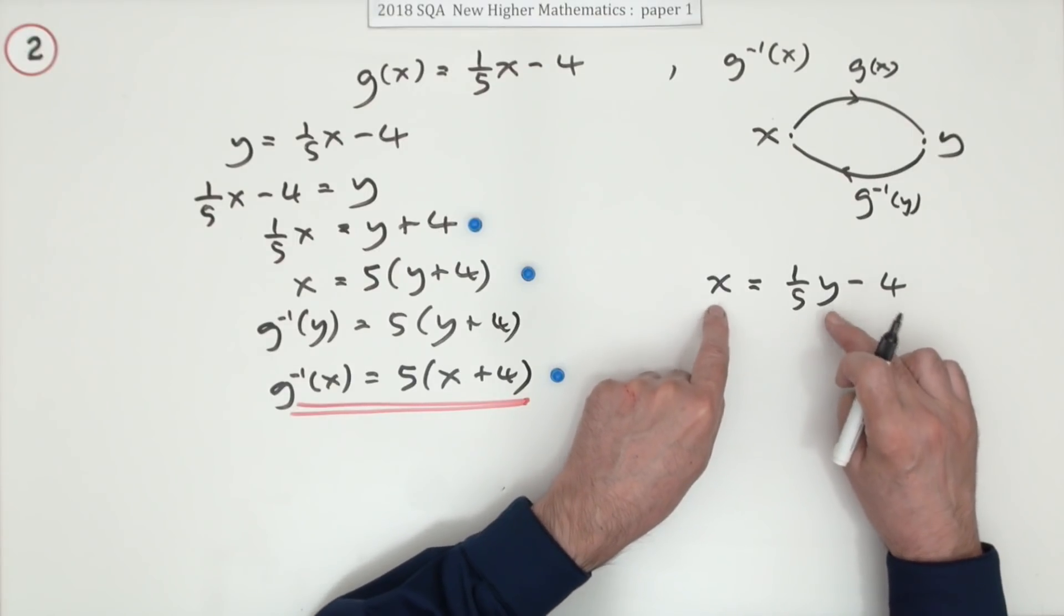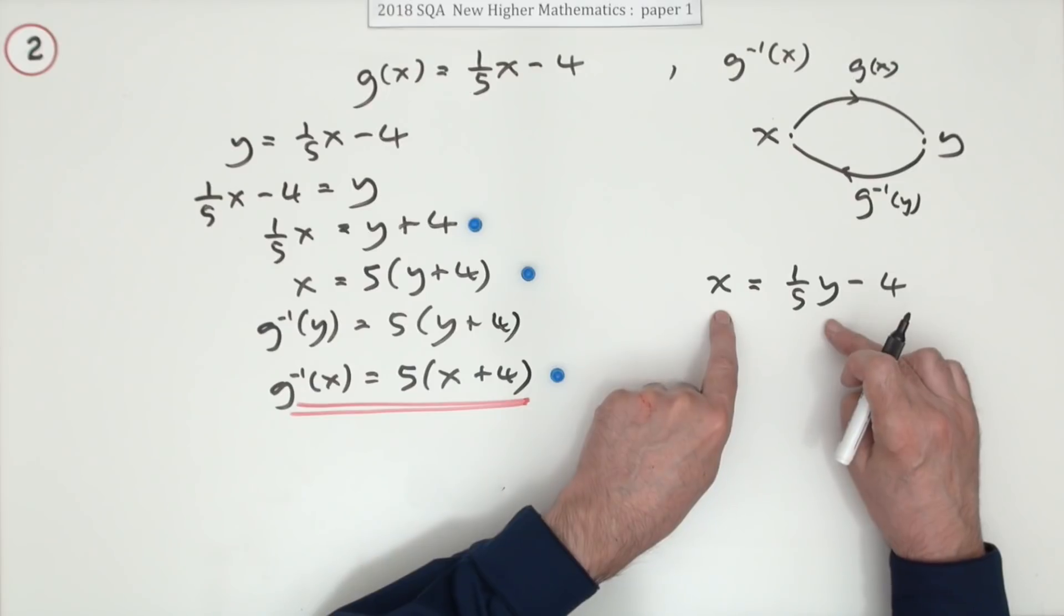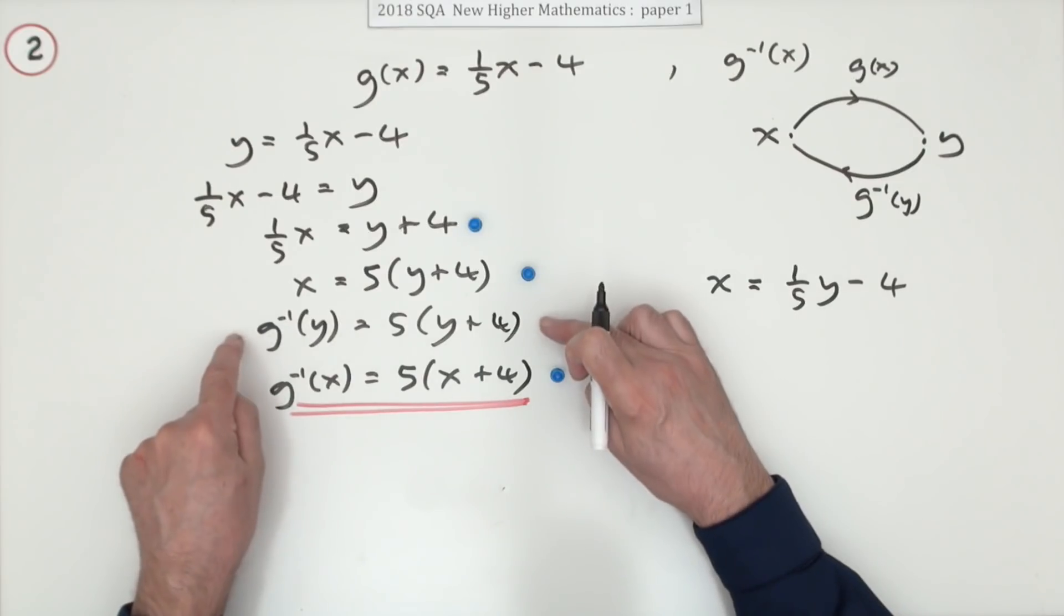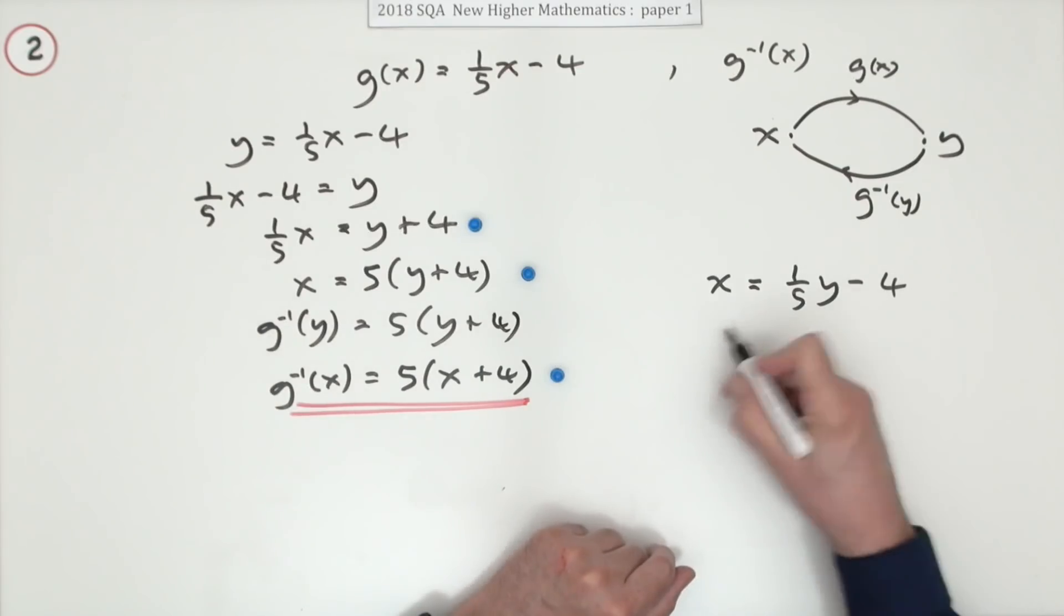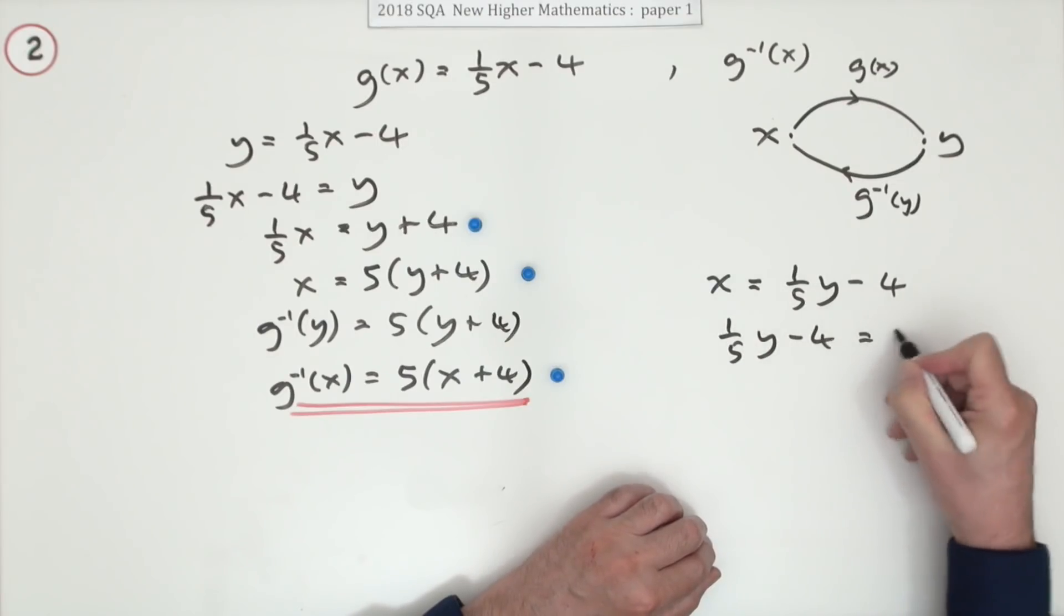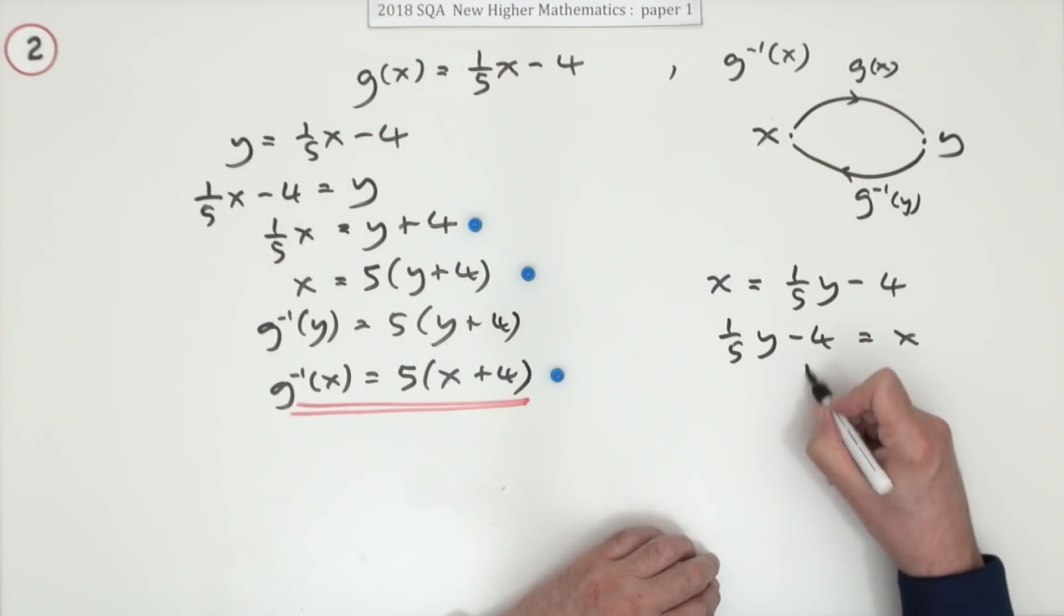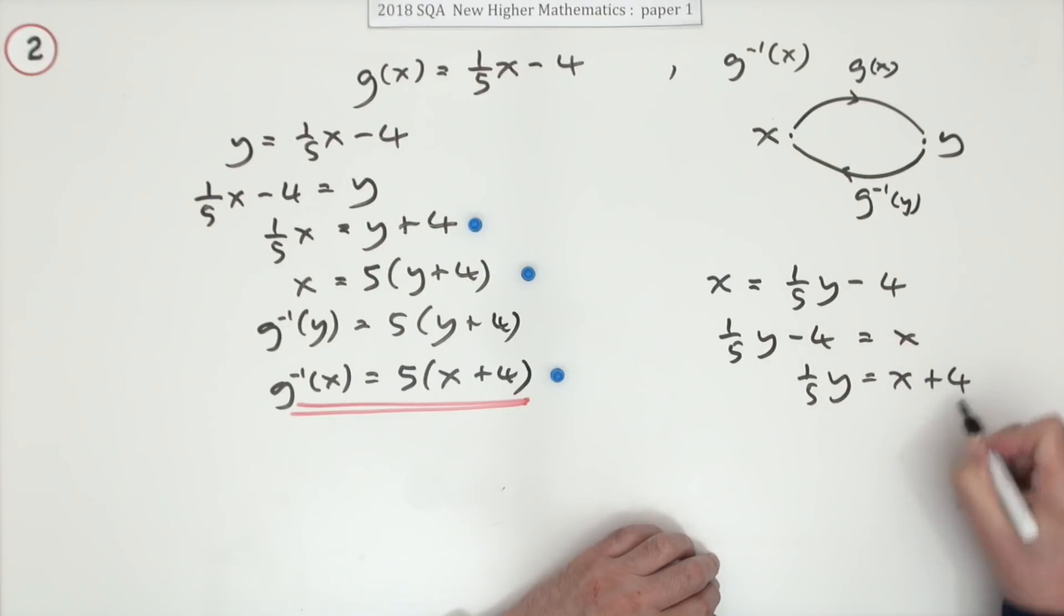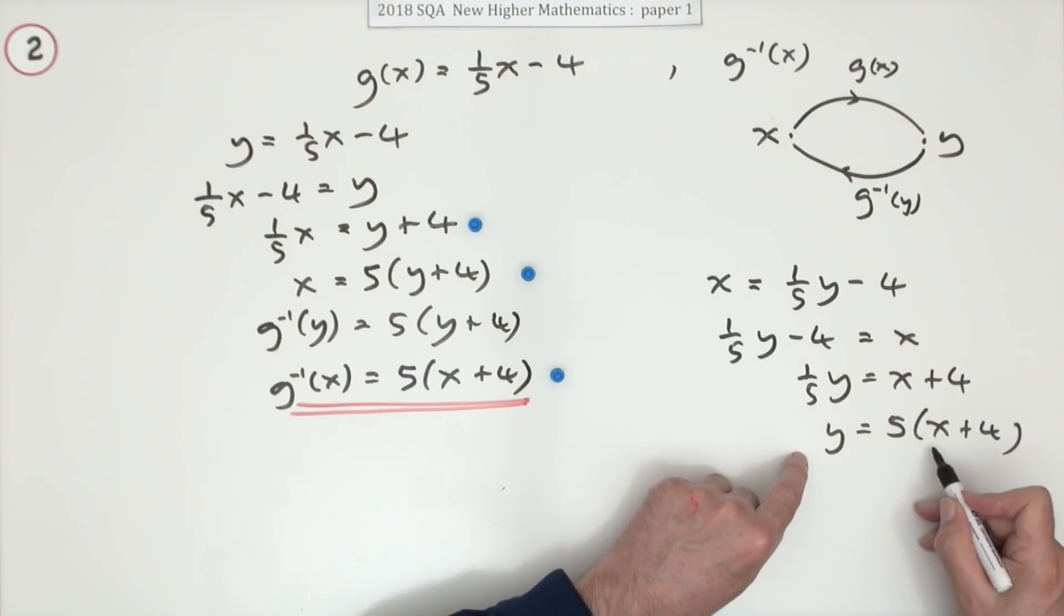It's just that you want to rearrange it so x is what's being put in, so this is just called interchanging the variables, really just for a little contrivance to avoid this little business here. So rearranging, that's the same as before: a fifth of y minus four equals x, it's just exactly the same. A fifth of y is x plus four, so y is five times x plus four, but of course now it's ready made.